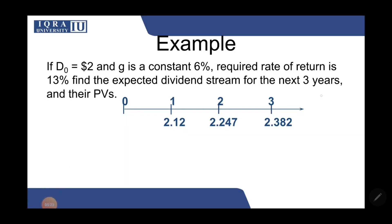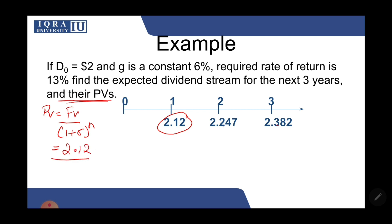In the next step, calculate the present values using the single cash flow PV formula. For D1: PV = 2.12 divided by (1 + 0.13)^1, which gives 1.8761.